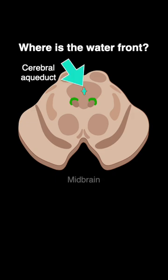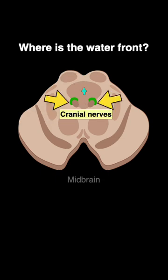First, where's the waterfront? There it is — the cerebral aqueduct. Around the aqueduct in the midbrain is the periaqueductal gray matter, which pushes cranial nerve nuclei a little farther away from the waterfront than usual.